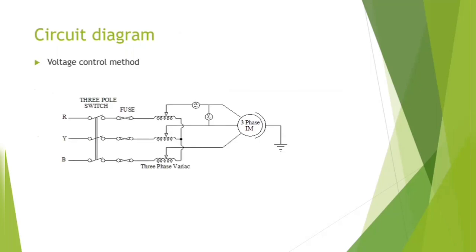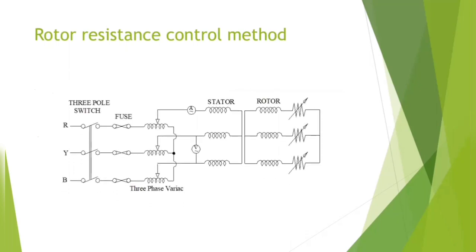We have circuit diagrams for three methods. Voltage control method is given by this circuit, and the rotor resistance control method is given by this circuit. The difference between the circuits is only the addition of the external resistance.